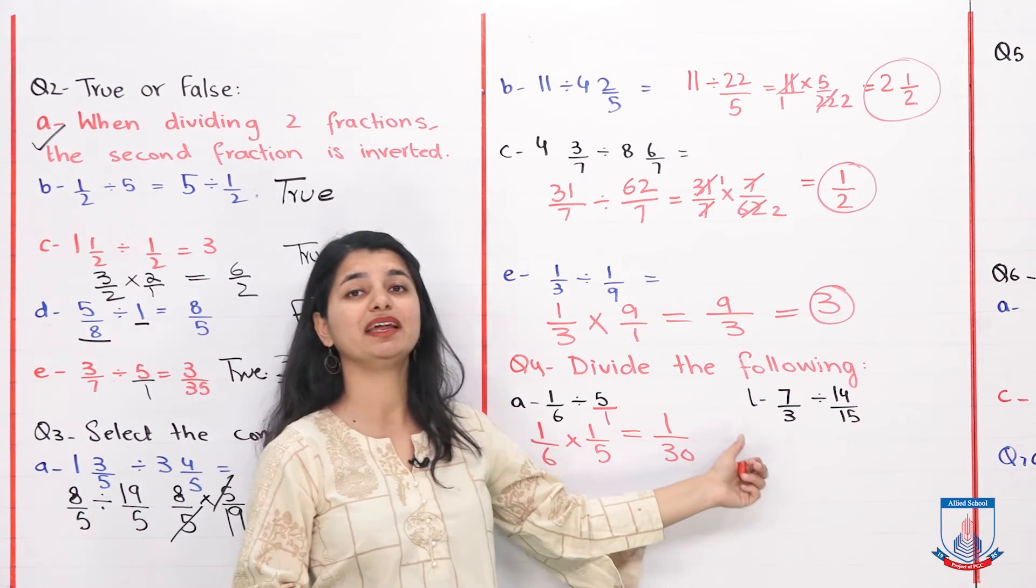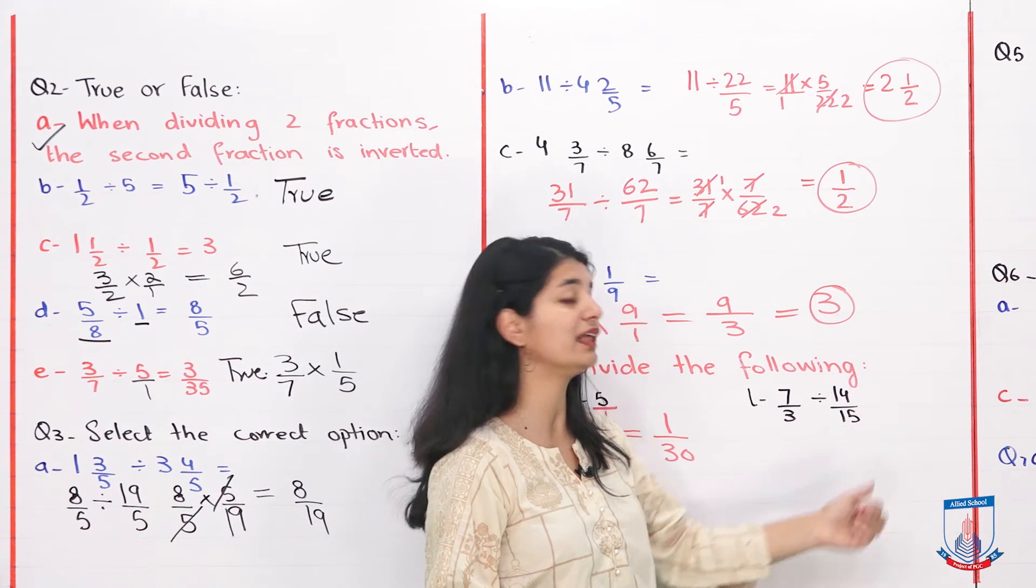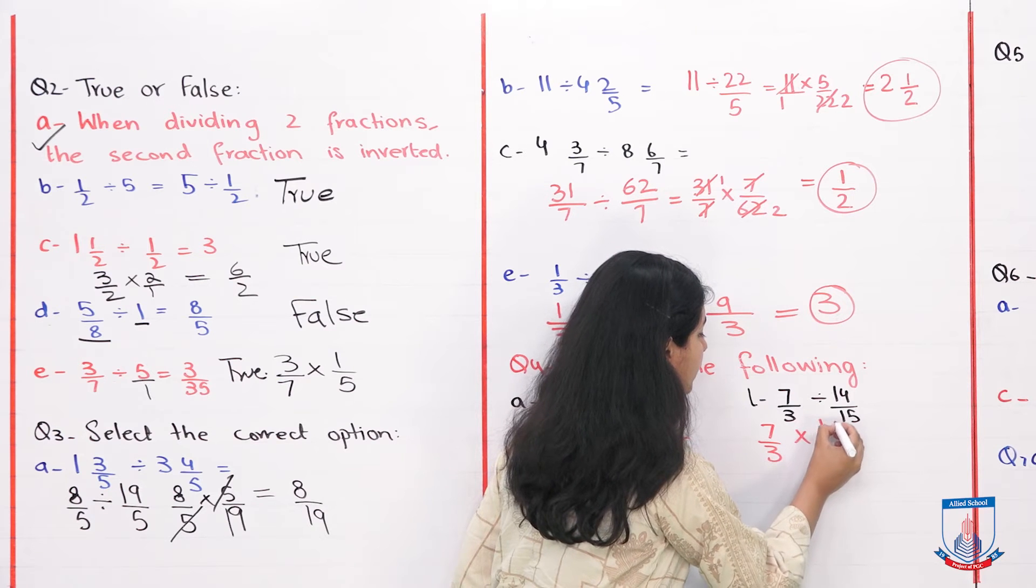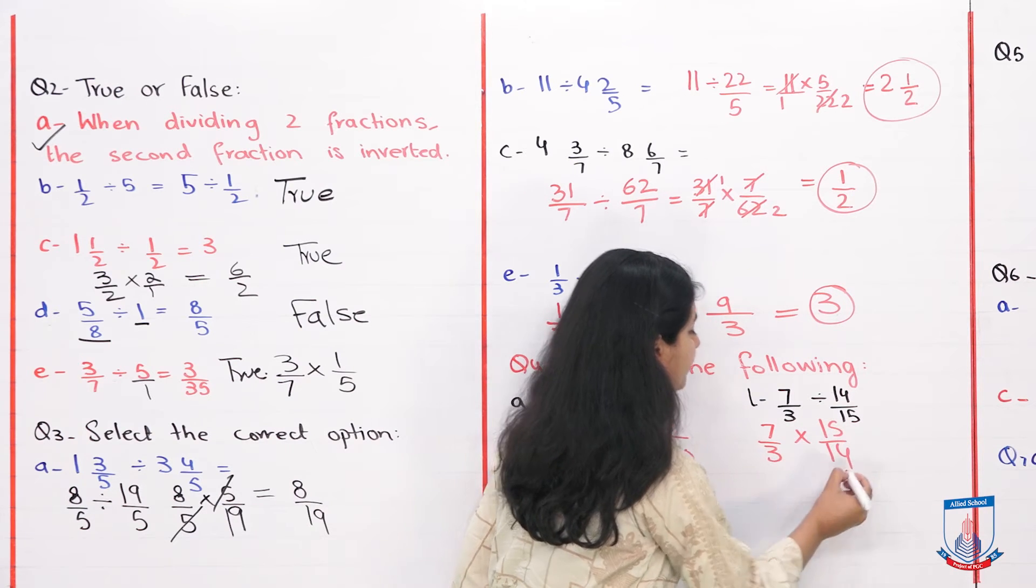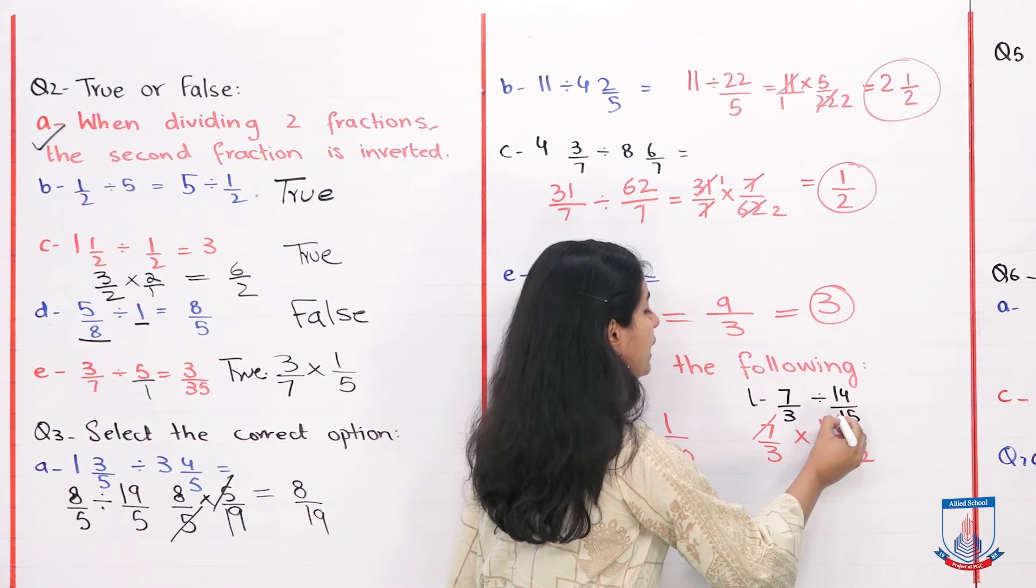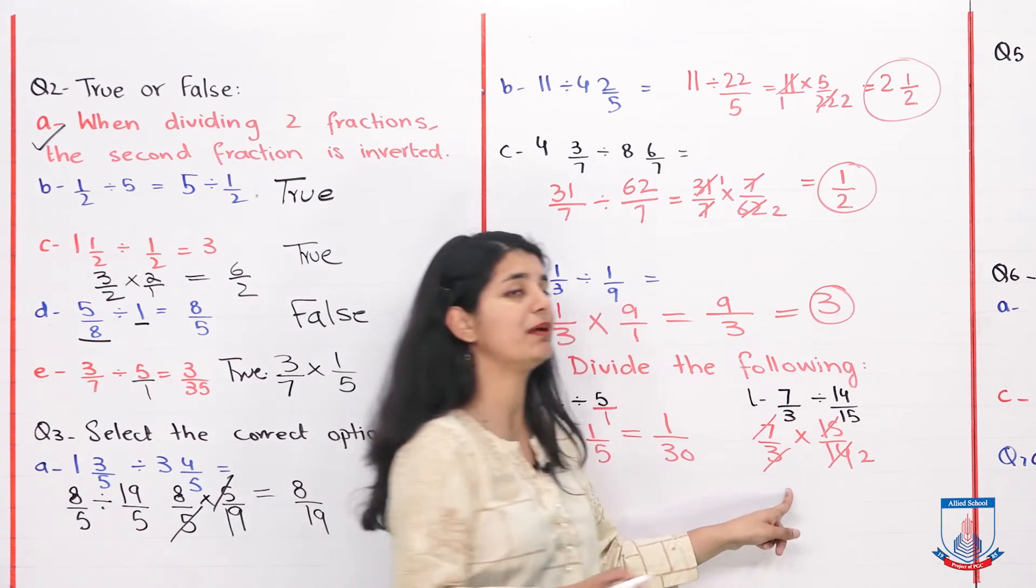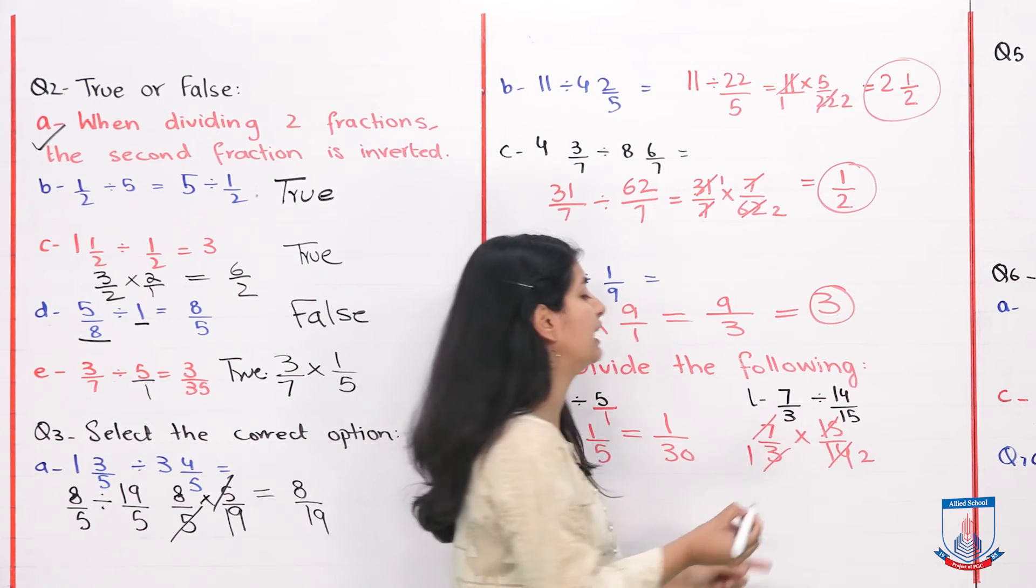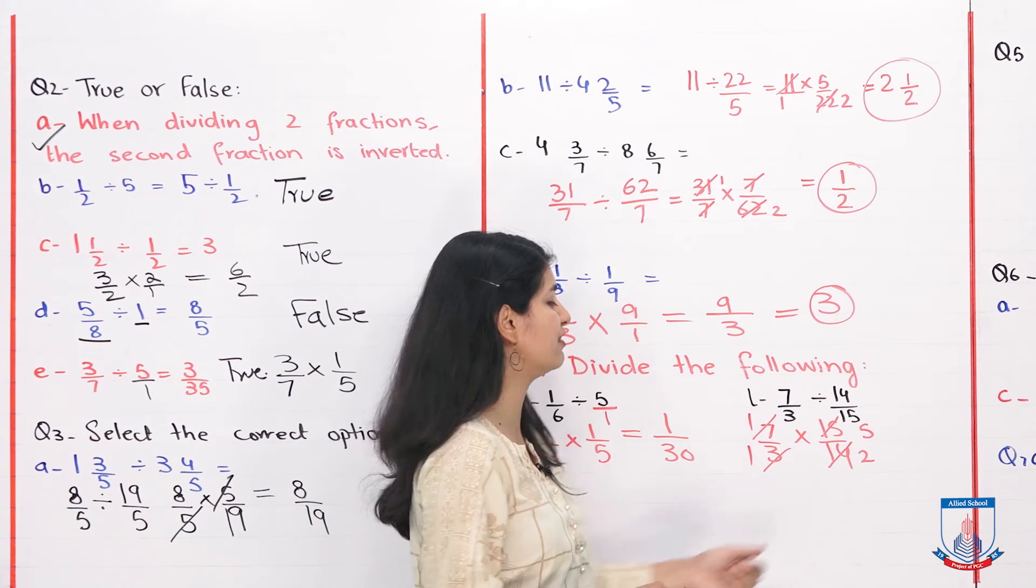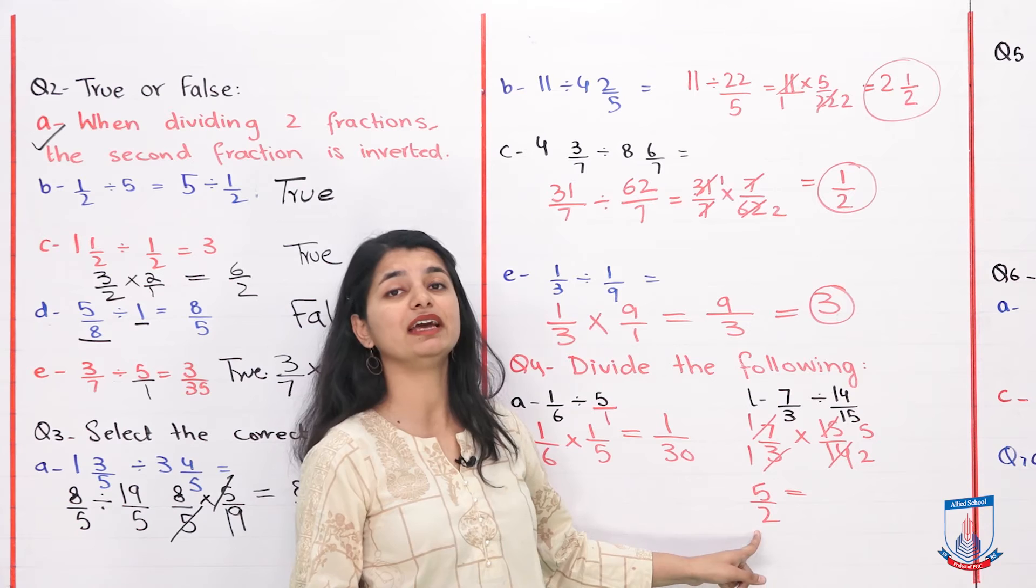Last part we will see, which is part L: 7 over 3 divided by 14 over 15. The method is take the inverse: 7 over 3 into 15 by 14. Now cancel them out. Here comes 2. Cancel these, 15 and 3, both can be divided by 3. 3 divided by 3 is 1, 15 divided by 3 is 5. What's left? You're only left with 5 by 2.